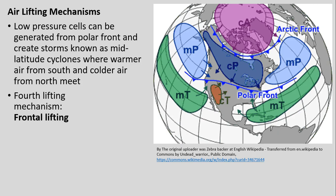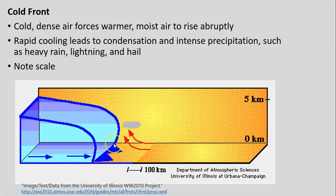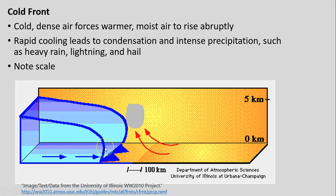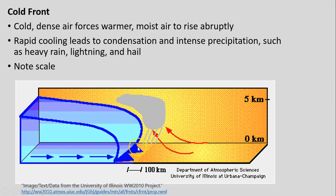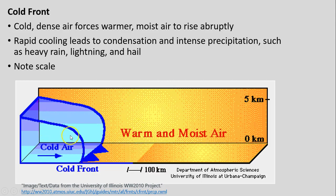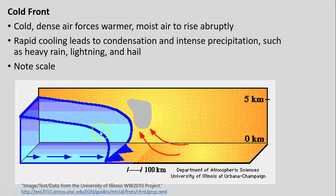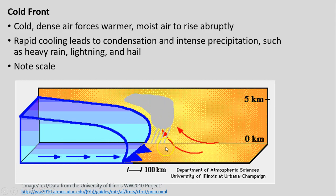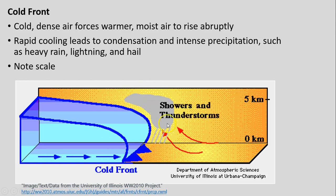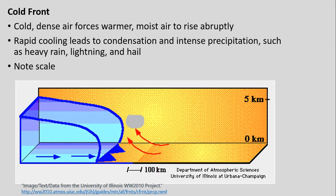That brings us to our fourth lifting mechanism: frontal lifting. We have cold or warm fronts. Our cold front, as its name implies, has all colder air behind it. As that cold front moves forward, that colder, denser air forces the warmer air in front of it to rise relatively abruptly. That warm, especially if it's moist air, rises very quickly and then cools very quickly.